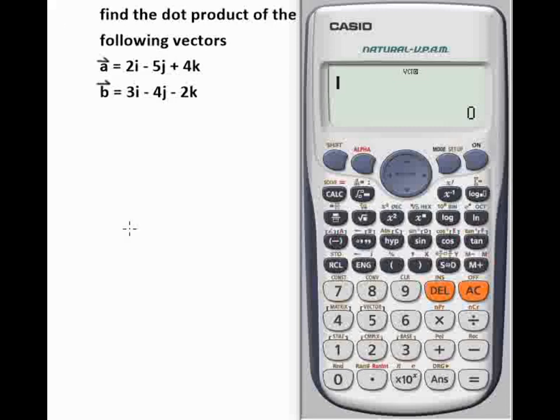The problem we have for today: find the dot product of the following vectors. Vector a is equal to 2i minus 5j plus 4k, while vector b is 3i minus 4j minus 2k. So we start by clearing our calculator.